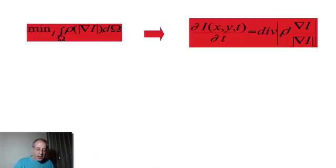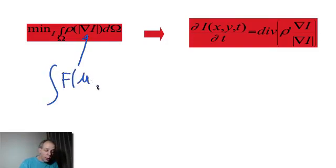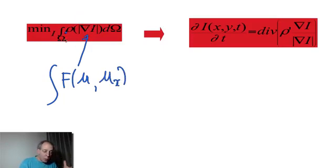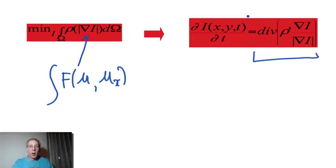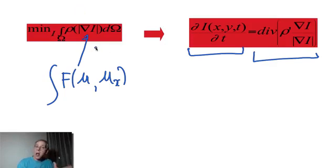These equations are the result of calculus of variations. If we define any function ρ of the gradient — where the gradient is the derivative of the image and ρ takes the role of f — we take any function of the magnitude of the gradient. Computing the Euler-Lagrange equation gives us the result shown. The partial differential equation is obtained by deforming the image equal to the Euler-Lagrange, and when it stops changing we have at least a local minimizer of this functional.